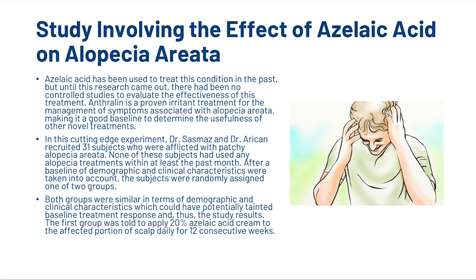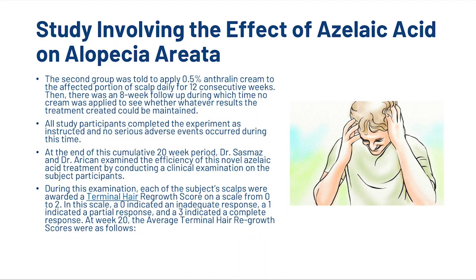In this experiment, Dr. Sasmaz and Dr. Arikan recruited 31 subjects who were afflicted with patchy alopecia areata. None of these subjects had used any alopecia treatments within at least the past month. After baseline demographic and clinical characteristics were taken into account, subjects were randomly assigned to one of two groups. The first group applied 20% azelaic acid cream to the affected portion of scalp daily for 12 consecutive weeks. The second group applied 0.5% anthraline cream to the affected portion of scalp daily for 12 consecutive weeks. Then there was an 8-week follow-up during which no cream was applied, to see whether the results of the treatment could be maintained.